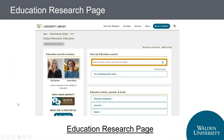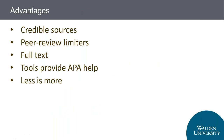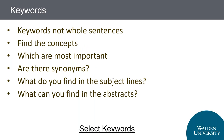The advantages of using the library include credible sources without a doubt, peer review limiters, full text availability, and APA citation help. As I like to put it, less is more — going through 100 or 300 results in a library database is much easier than wading through a Google search. The key things to remember: use keywords, pull out the most important main concepts, and think about synonyms, because additional vocabulary may be used that you weren't thinking of. You can add those as you find them by looking at subject lines and abstracts.